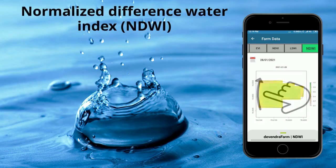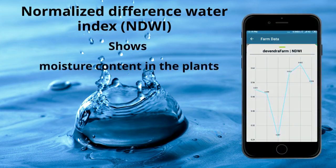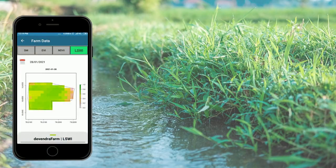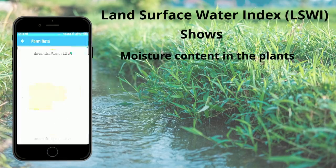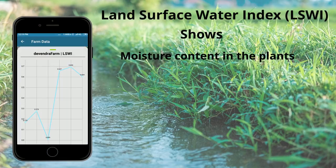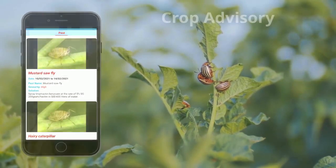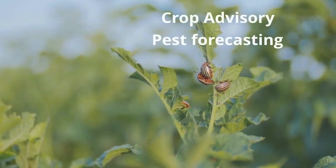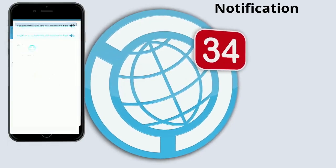Hit on NDWI to show the moisture content in the plants. Hit on LSWI, which also shows moisture content in the plants. Hit on Crop Advisory to get the best forecasting, and tap the bell icon to receive notifications for your farm.